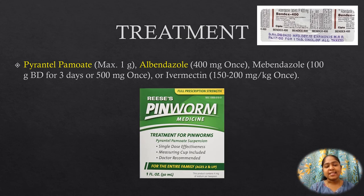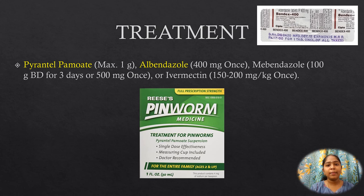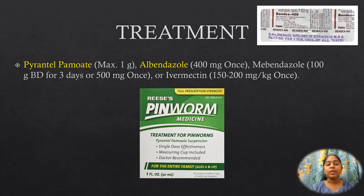Treatment of Ascariasis. Pyrantel pamoate 11 mg/kg; Albendazole 400 mg once; Mebendazole 100 mg twice daily for 3 days or 500 mg once. These medications are contraindicated in pregnancy; Pyrantel pamoate is safe in pregnancy. Partial intestinal obstruction should be managed with nasogastric suction, intravenous fluid administration, and instillation of piperazine through the nasogastric tube. Complete obstruction requires immediate surgical intervention.